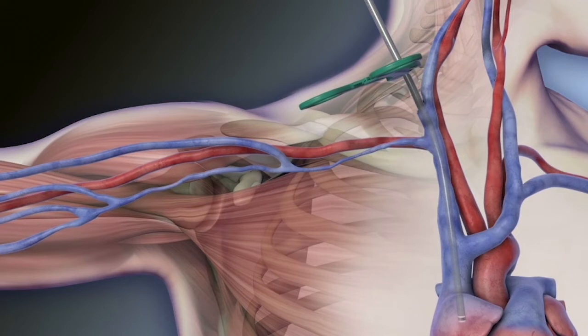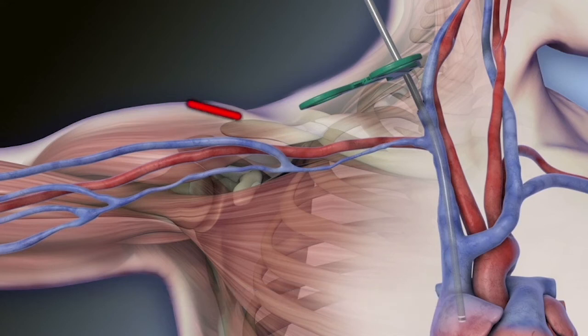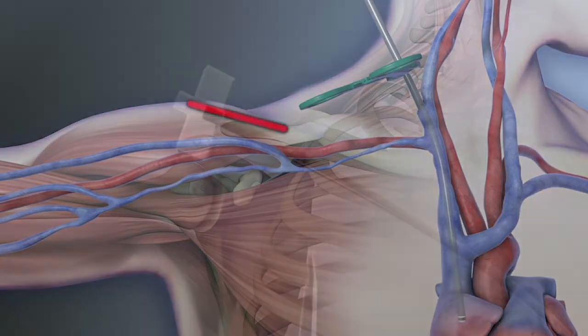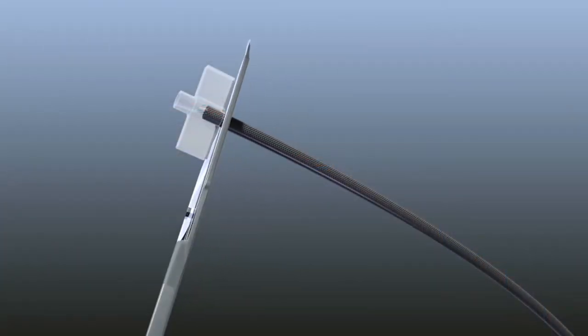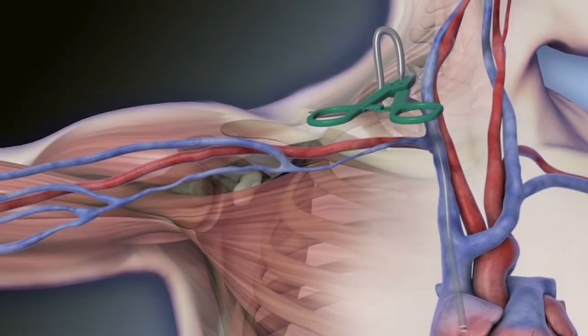Clamp the venous outflow component at the incision site. Create an incision at the deltopectoral groove. Cut the lower end off of the venous outflow component and tunnel from the neck incision to the DPG incision.